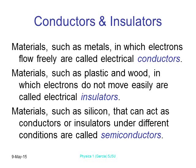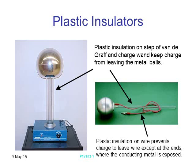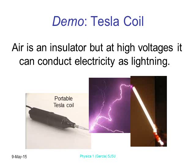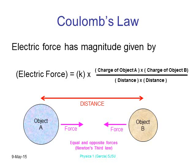Then you have things like silicon — semiconductors. That means sometimes they act like a conductor and sometimes like an insulator. Plastic is definitely an insulator, useful on the outside of wires so charges can't jump off where you don't want them. When you look at something like a Tesla coil, air is normally an insulator, but at very high voltages it can conduct electricity — at super high voltages you can break oxygen apart, create ozone, and it will conduct electricity.